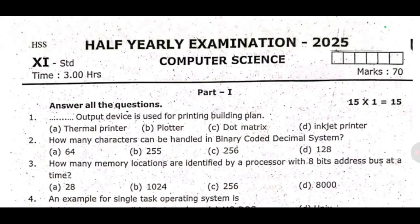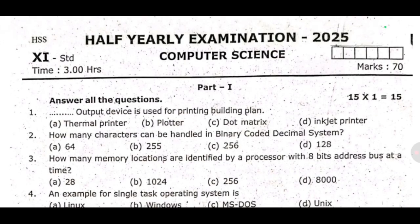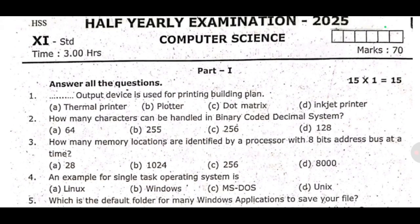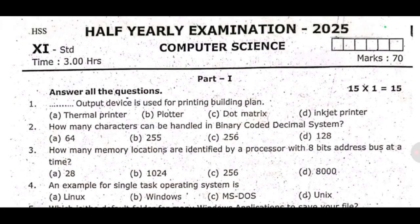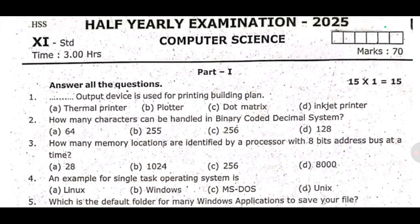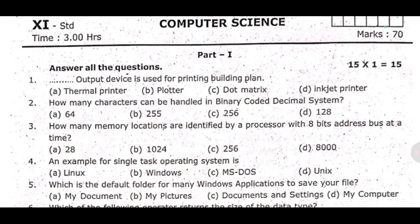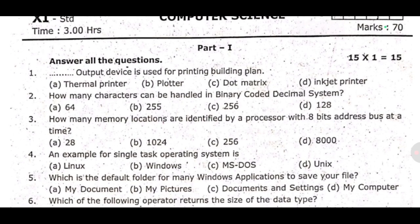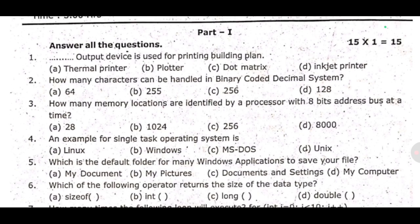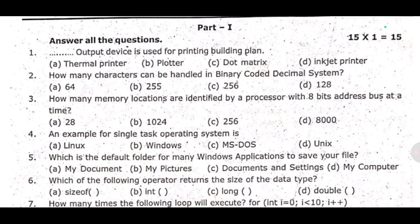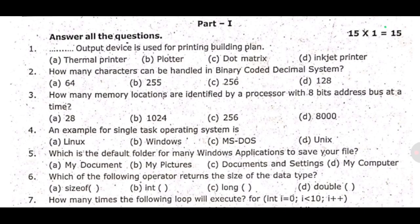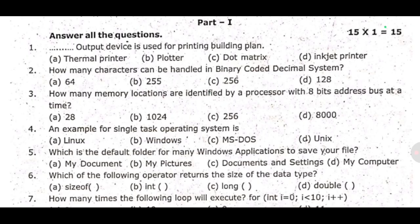First, we'll see some of the answers. First one: which output device is used for printing building plan? Second: how many characters can be handled in Binary Coded Decimal System? Third: how many memory locations are identified by a processor with 8 bits address bus at that time? Fourth: an example for single task operating system is? Fifth: which is the default folder for many windows applications to save your file?